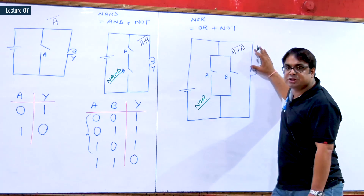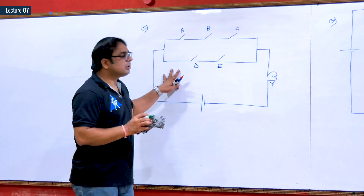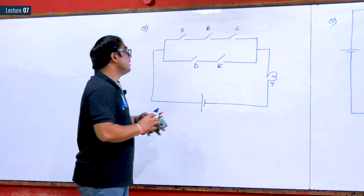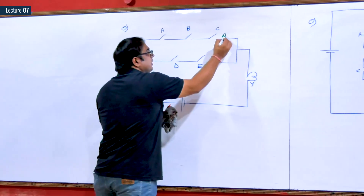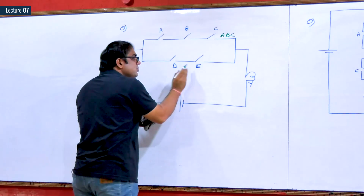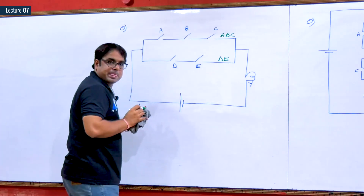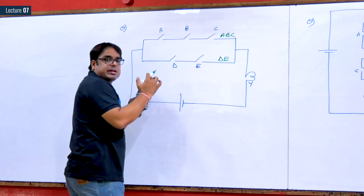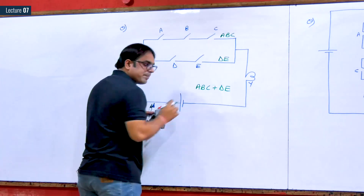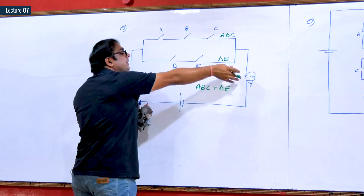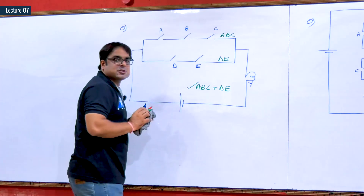That is how you write the expression from a switching circuit. For another example: if three switches A, B, C are in series, the combination is A·B·C. Two more switches D and E are in series giving D·E. Both combinations are in parallel, so the output expression is A·B·C + D·E. Since the whole combination is not in parallel to the bulb, there is no whole complement. This is the final output expression.